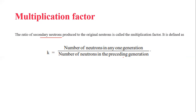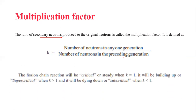The multiplication factor K determines the chain reaction. The chain reaction is called critical or steady when K equals 1. It is supercritical when K is greater than 1. It is subcritical and the reaction cannot be sustained when K is less than 1.